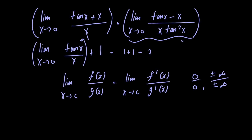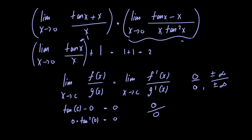Looking at this second limit, if we let x tend to 0 we get tangent of 0 minus 0, which equals 0, and in the denominator 0 multiplied by tangent squared of 0, which is also 0. So our limit is of indeterminate form 0 over 0, and we can apply L'Hôpital's Rule.